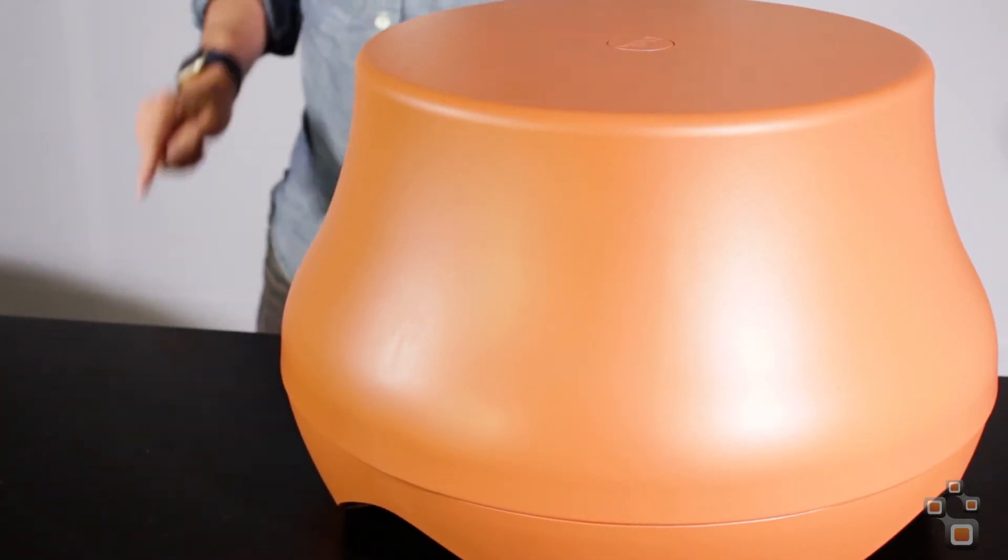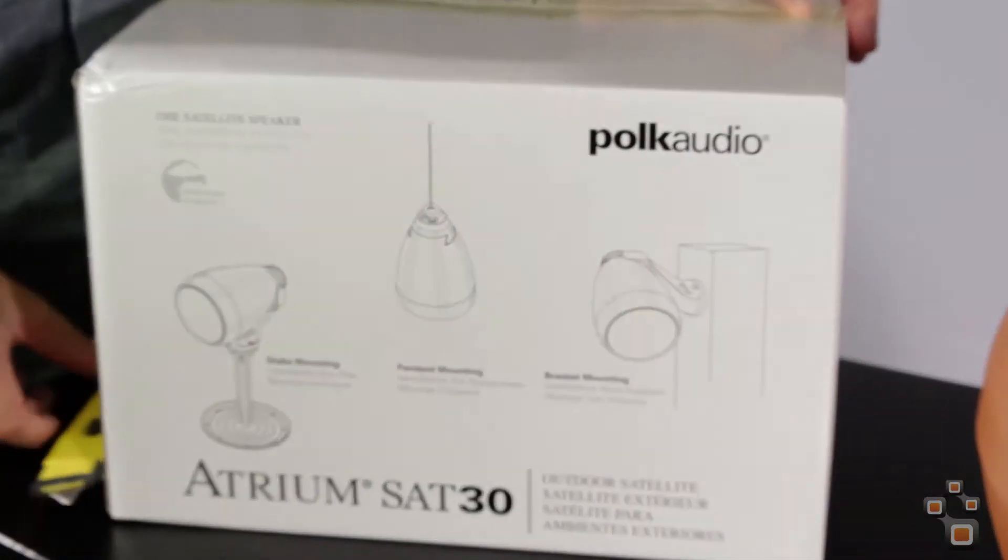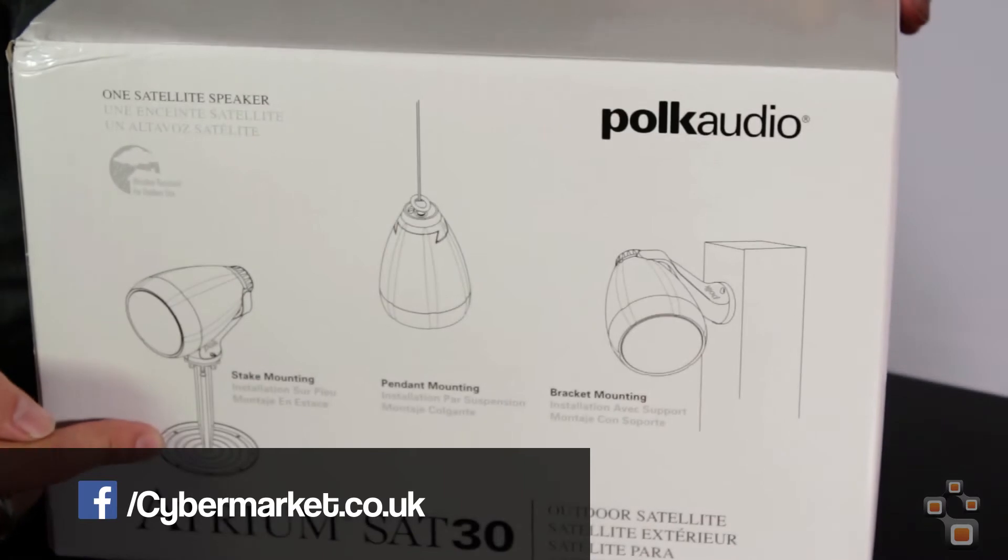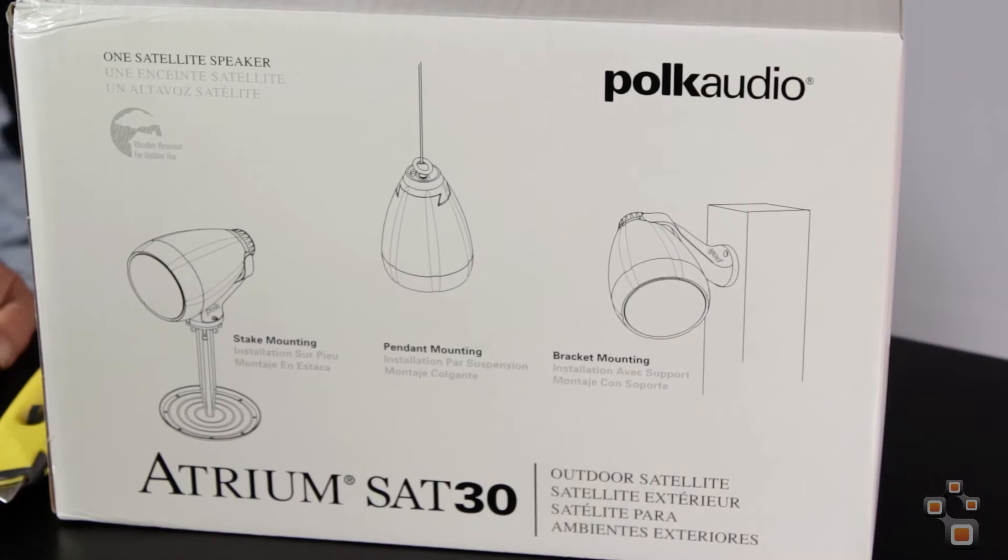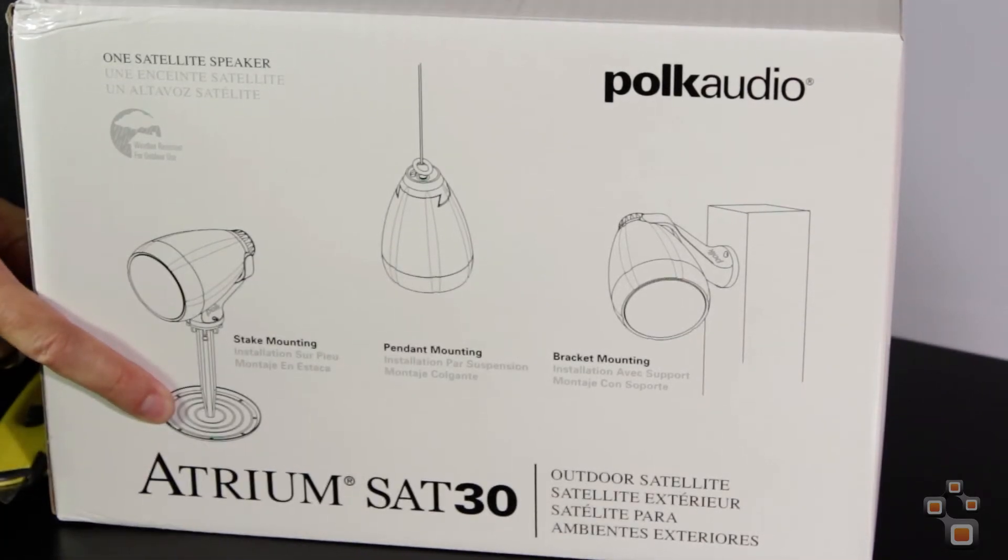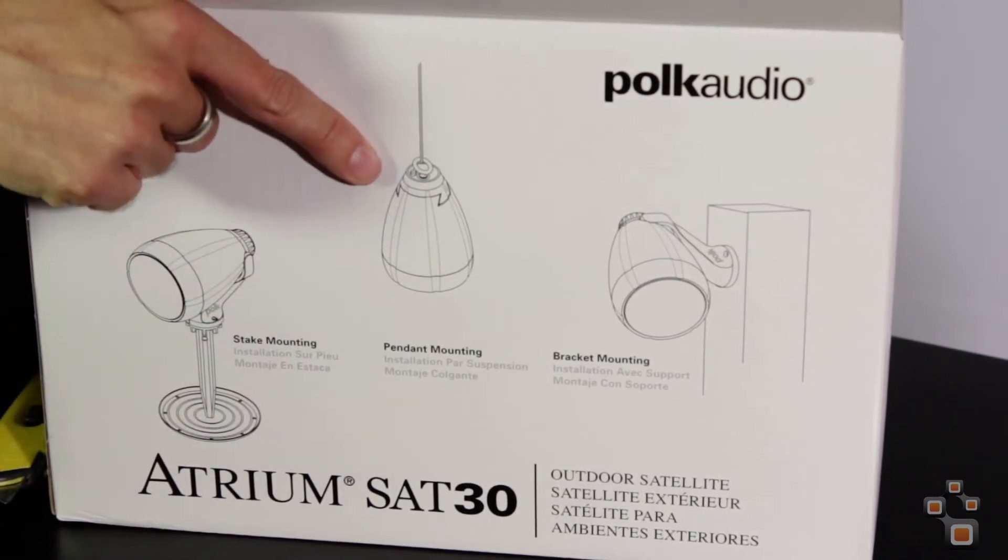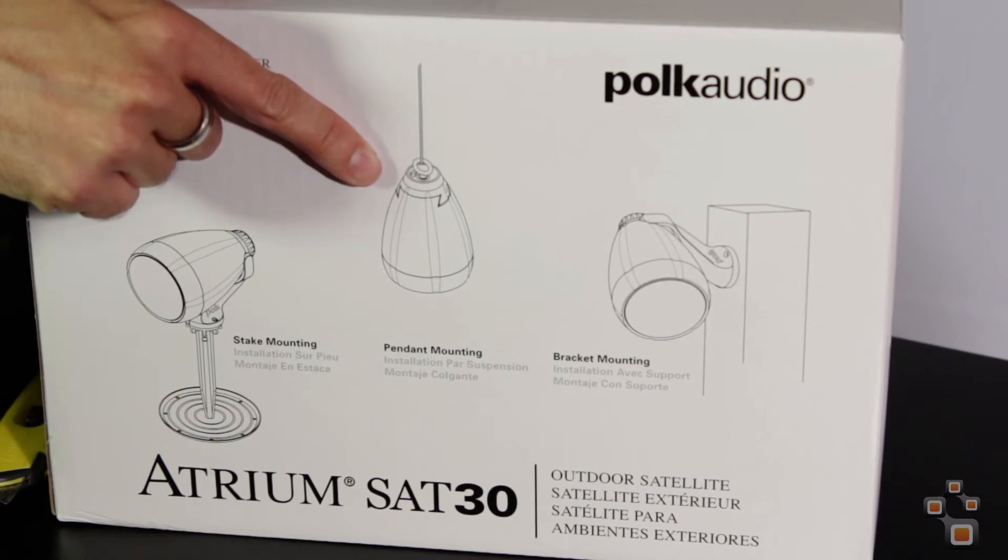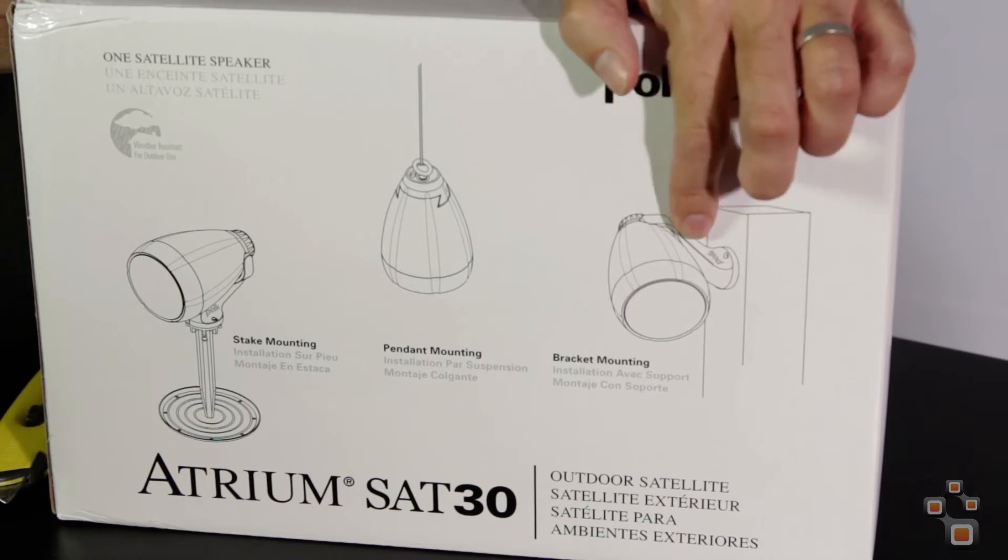Especially with this, which is the Atrium Sat 30. Now just on a little box here, before I open it and take it away, it's got a couple of installation ideas. You can actually install this speaker in a few different ways. You can use it as a stake speaker in the floor, so it comes with a stake mounting that goes into the ground. It can be hung, like here, and it can also be bolted to a wall, so it can be bracket mounted as well.